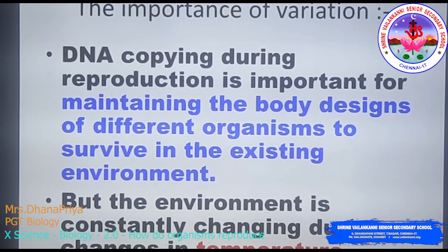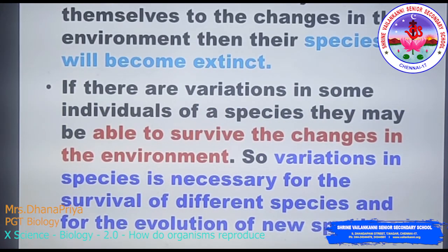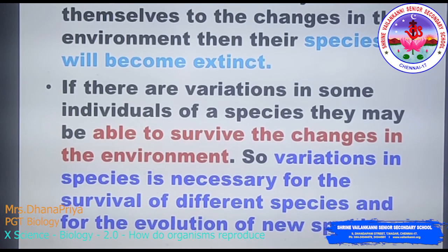Variation through DNA copying during reproduction is important for maintaining the body design of organisms to survive in the existing environment. But the environment constantly changes due to changes in temperature, climate, and water levels. If organisms cannot adjust to these changes, the species will become extinct. However, if there are variations in some individuals of a species, they may be able to survive environmental changes. Variation in species is therefore necessary for the survival of different species and for the evolution of new species.